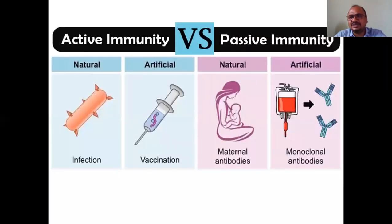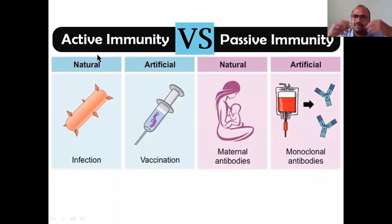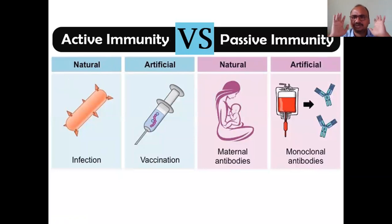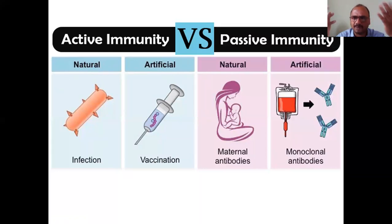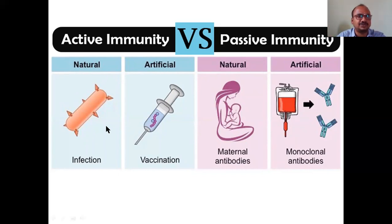What is immunization? What is vaccination? There are two types of immunity: active immunity and passive immunity. Active immunity means our own body develops the immune system - our own immune system produces the antibodies. That is called active immunity because our body itself is active and produces the antibodies. It is also of two types: natural and artificial.